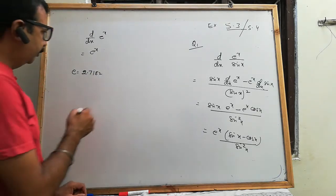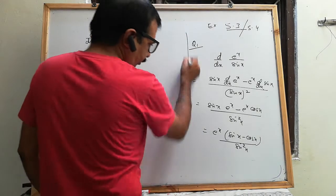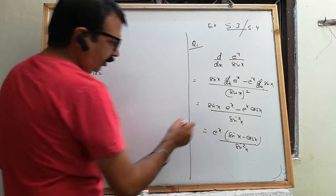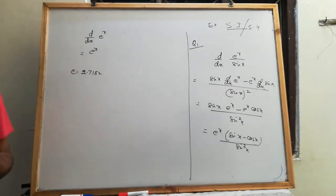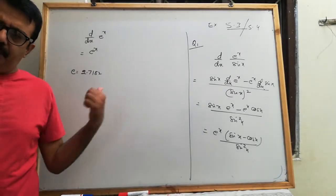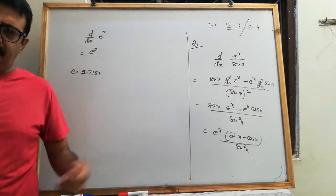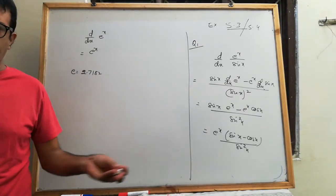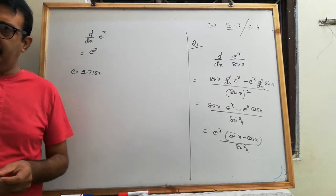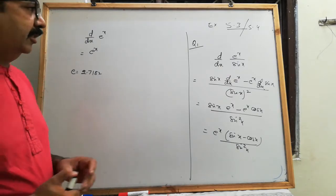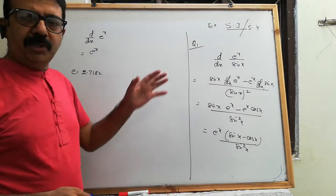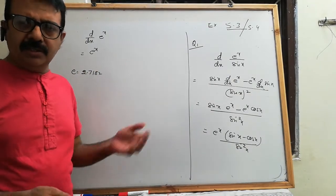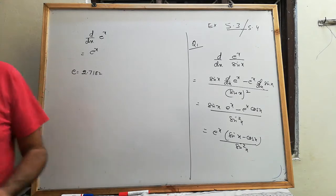e का जो derivative है, e to the power of x का derivative भी e to the power of x ही है। और integration करेंगे तो भी यही आएगा — यह ऐसा function है जिसका differentiation और integration same होता है।